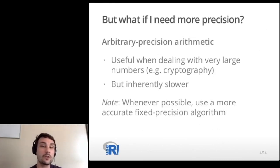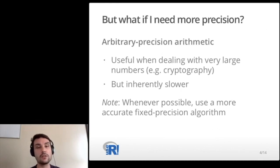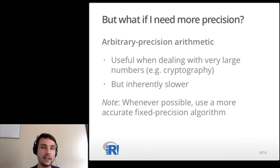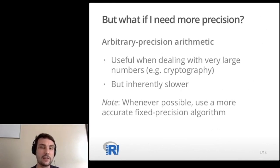This can be useful when, for example, dealing with very large numbers, which can be the case in cryptography. But it's inherently slower because instead of performing arithmetic using machine instructions and the CPU, it uses software, which is inherently slower. I want to point out that even though arbitrary precision seems natural in most cases, whenever possible we should really try to use more accurate fixed precision algorithms instead.